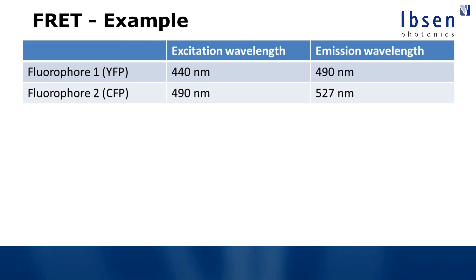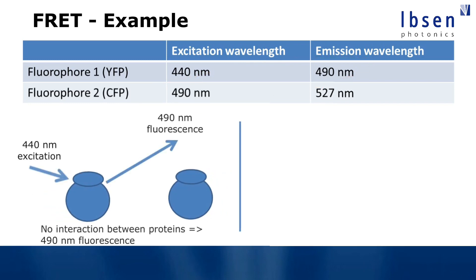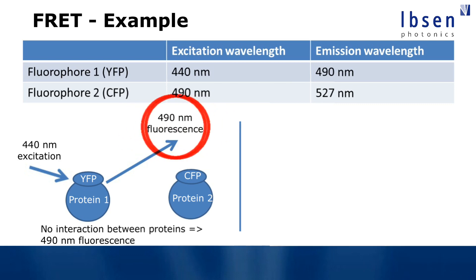Here's an example of two fluorophores, IFP and CFP. The excitation wavelength is 440 nanometers for IFP, the emission wavelength is 490 nanometers, and 490 nanometers is also the absorption peak for CFP, which then emits at 527 nanometers. In the first situation, protein 1 and protein 2 are far away from each other. When we send 440 nanometer light in, we measure fluorescence at 490 nanometers and no emission at 525 nanometers, meaning there is no interaction between the molecules.